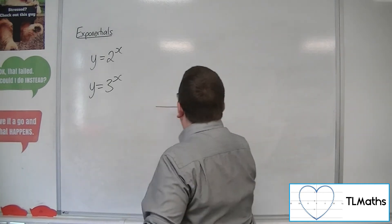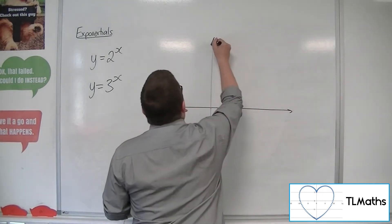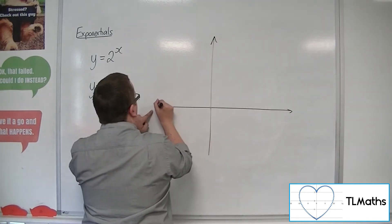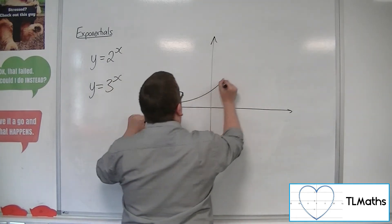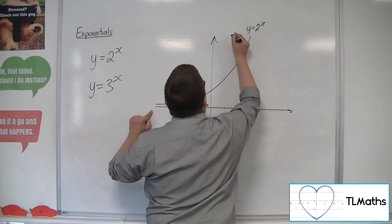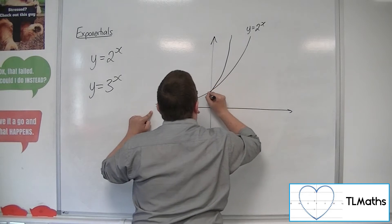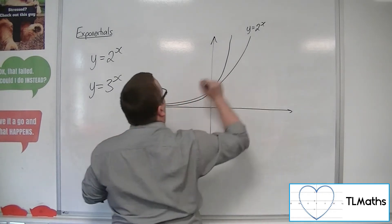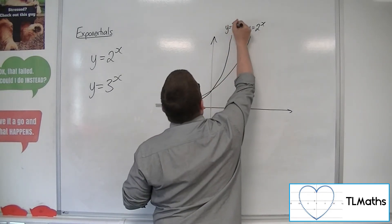So let's just draw them. Here's y equals 2 to the x. This is y equals 3 to the x.